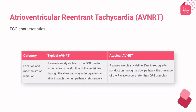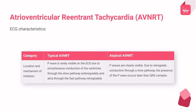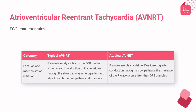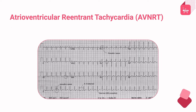In typical AVNRT, the P wave is rarely visible on the ECG due to simultaneous conduction — anterograde to the ventricles through the slow pathway and retrograde to the atria through the fast pathway. The P waves are inscribed in the QRS complex or occur near it, creating a short RP interval (less than half the RR interval). This can manifest as a pseudo-S wave in inferior leads II, III, and AVF and a pseudo-R wave in V1. In atypical AVNRT, P waves are clearly visible due to retrograde conduction through the slow pathway, with the RP interval frequently longer than half the RR interval.